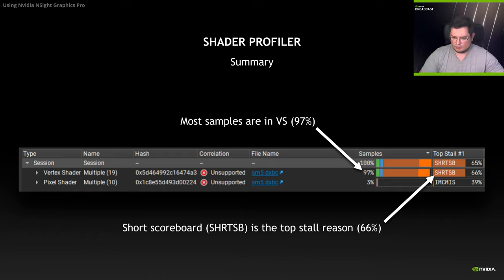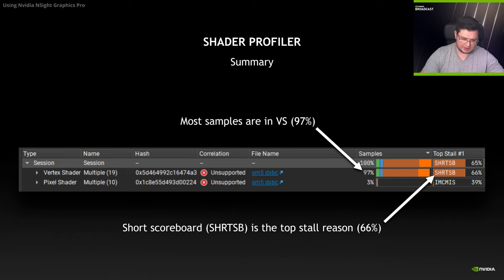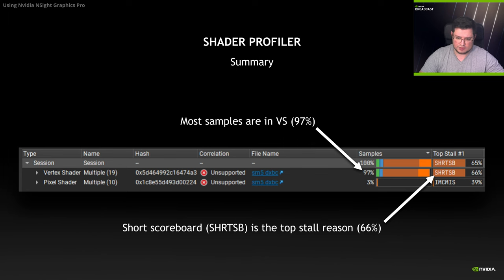By the way, short scoreboard means that the SM is waiting on some kind of result within itself, such as a memory access of shared thread group memory, or for example a cosine or a square root.